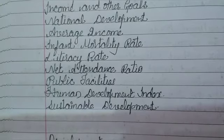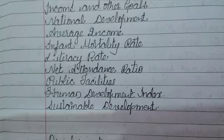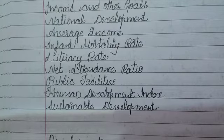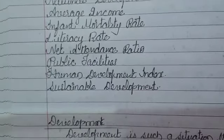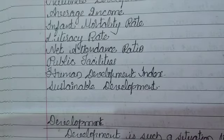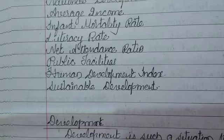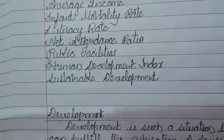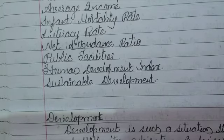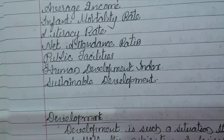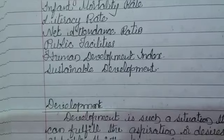Average income is the income earned per person in a given area. Infant mortality rate refers to the number of deaths under one year of age occurring among live births in a given geographic area during a given year. Literacy rate is the total percentage of the population aged 7 years or above who can read and write with understanding. Net attendance ratio is defined as the ratio of the number of people of the official age group attending any educational institution in a particular class group to the total number of people in that age group.